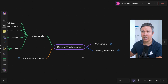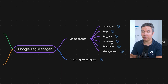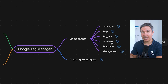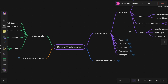What you should really focus on are now the components. We already talked about tags, triggers, and variables, but it actually starts with the tracking code itself that needs to be implemented correctly, which then builds the data layer. The data layer is a concept within Google Tag Manager that you can't leave out if you want to be proficient in the tool.